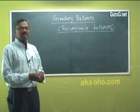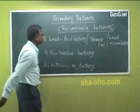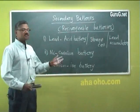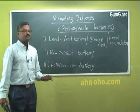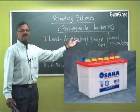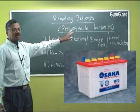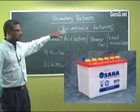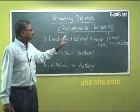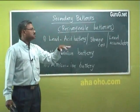The important type is the lead acid battery. This is also called a storage cell, storage battery, or lead accumulator. All these secondary batteries are called accumulators and also storage batteries because they can store energy and you can recharge these batteries.